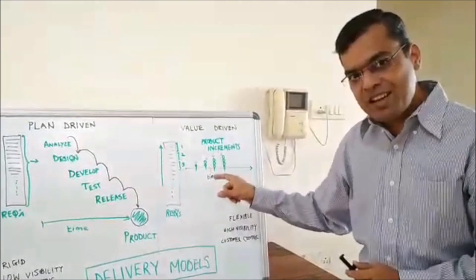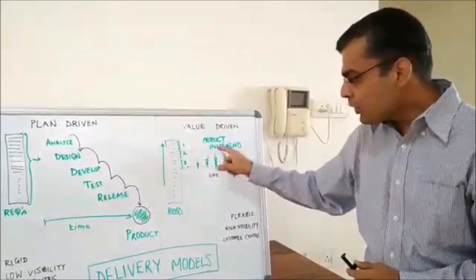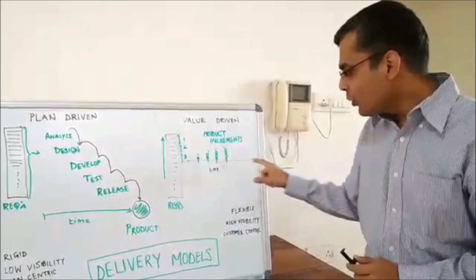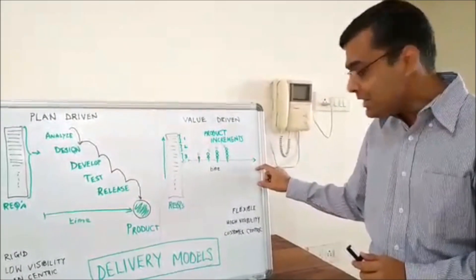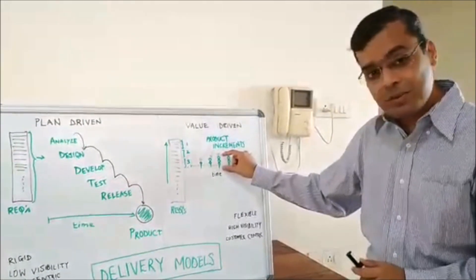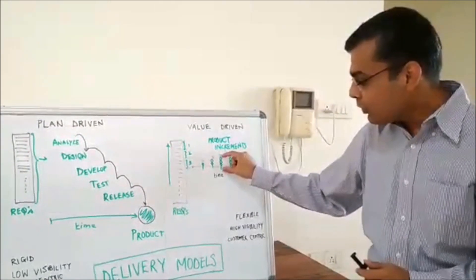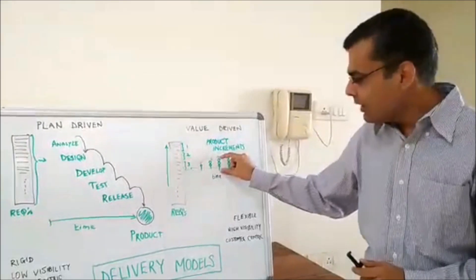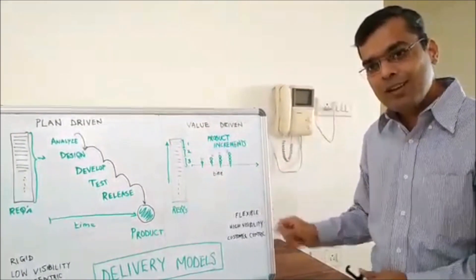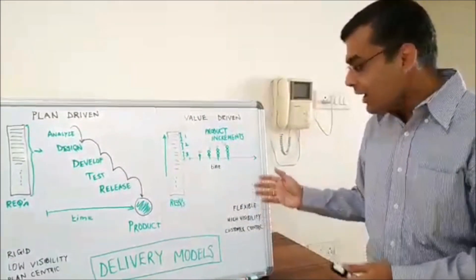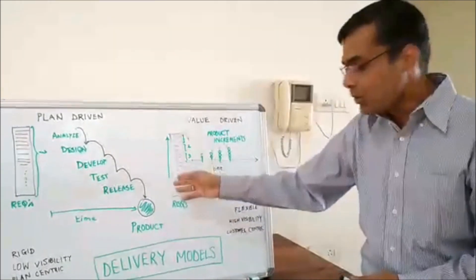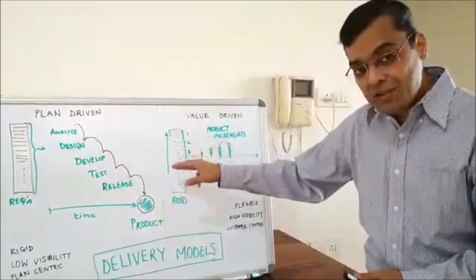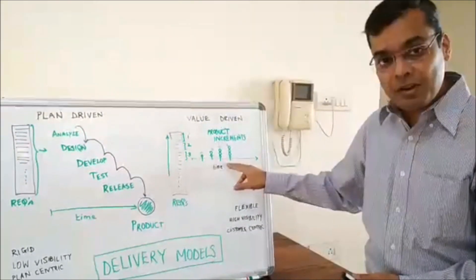Now whenever the delivery team decide that, the requirement that we have put together, this is of good value for the customer. So instead of waiting till the end of the release, say during the third iteration they realize that this is of business value. Let the customer use it. They give it to the customer so that way the customer can review it and also provide the feedback and based on that the requirements which are not being worked on can be refined further or changed and they can take it in the next iteration.